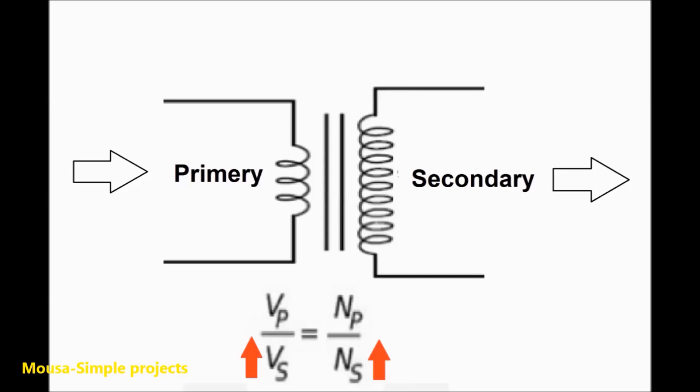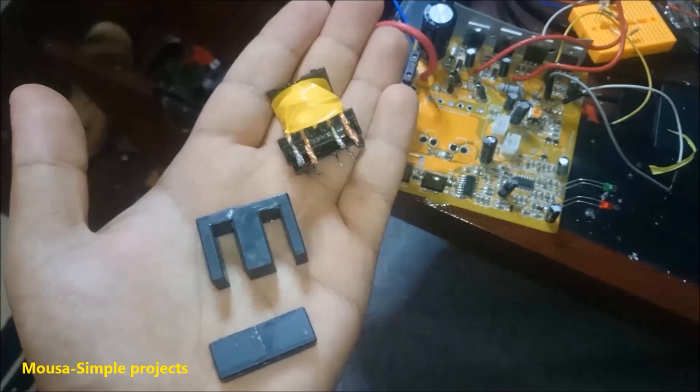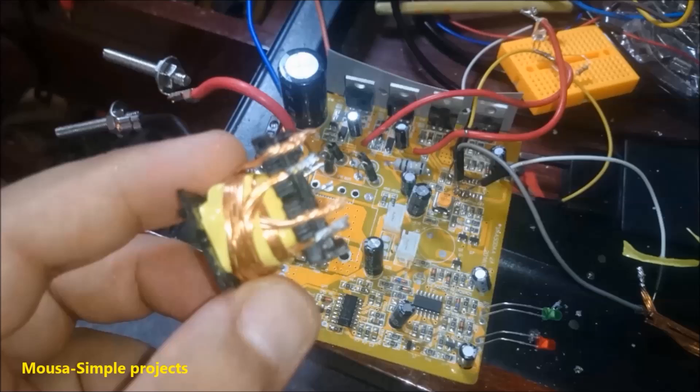The first way is increasing the output or secondary winding turns number. The second way is decreasing the primary winding turns number. So I removed this transformer from the board and opened it.